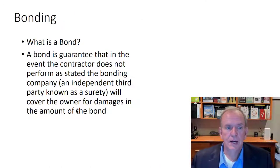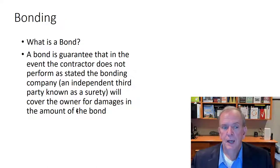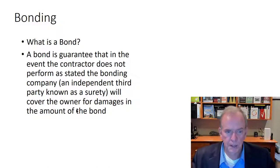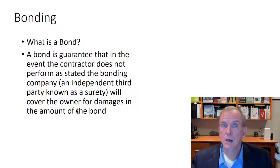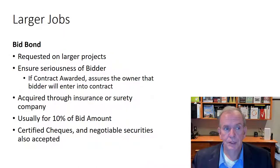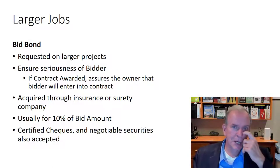If you're sitting there and you had a three million dollar bid and somebody else has two million while everybody else is around two million nine hundred to three million, that person with two million likely made a mistake. If it's a public project, that's where bonding comes in. Bonding is a guarantee that in the event a contractor does not perform as stated, the bonding company — an independent third party known as a surety, usually an insurance company — will cover the owner for damages in the amount of the bond.